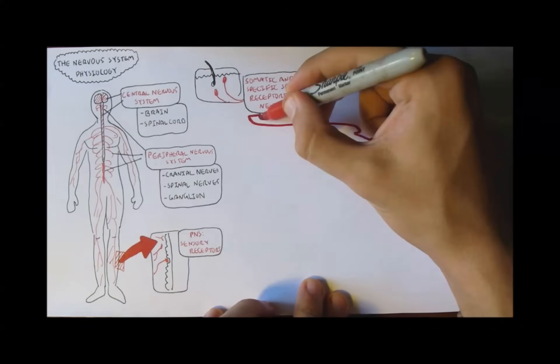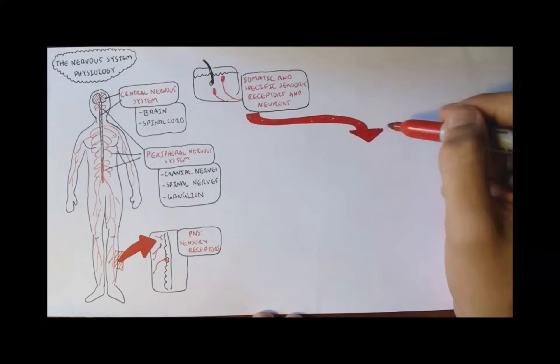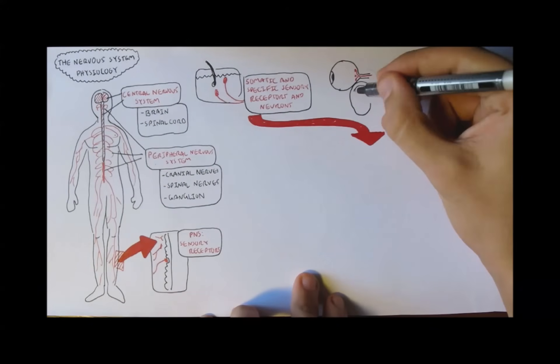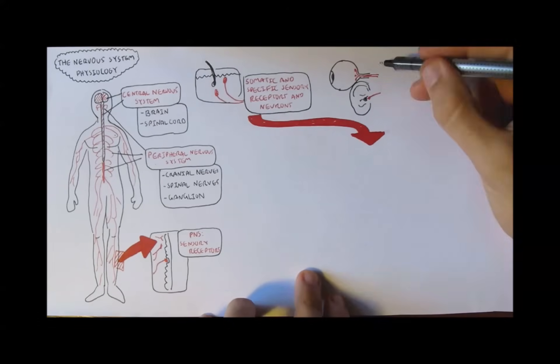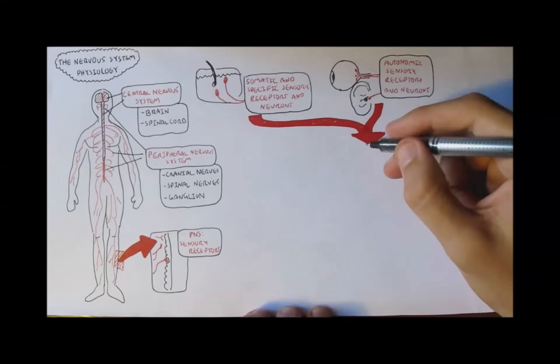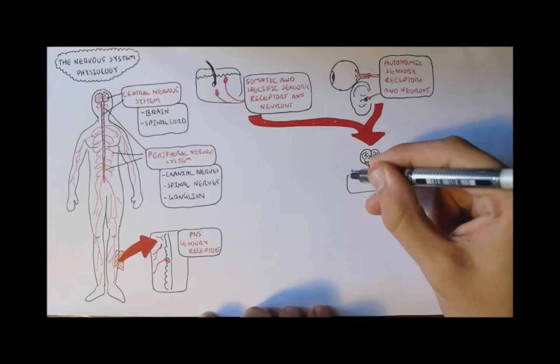We can say that the somatic sensory receptors, for example the ones under your skin, as well as the autonomic sensory receptors such as in your eyes and ears, after being stimulated or after detecting a stimulus, they will send signals to the central nervous system, CNS, for processing.